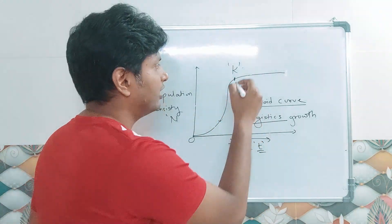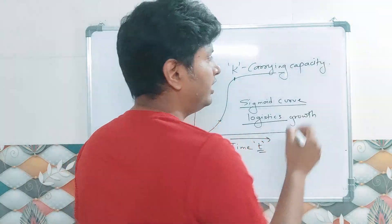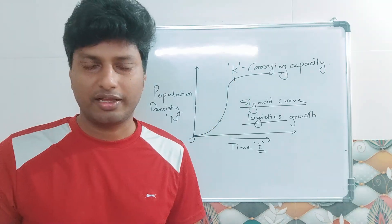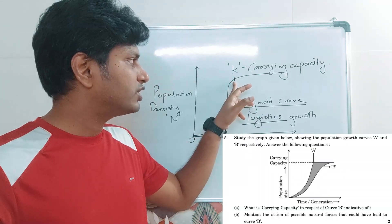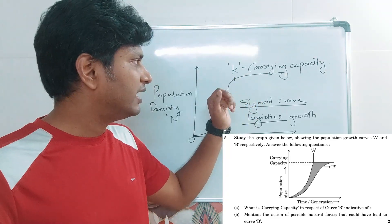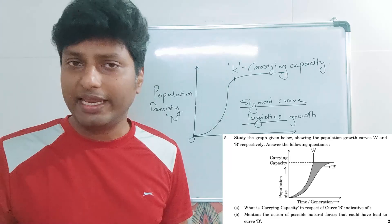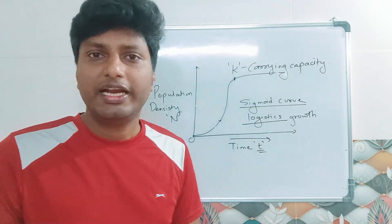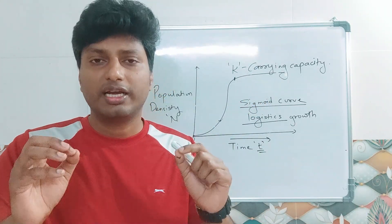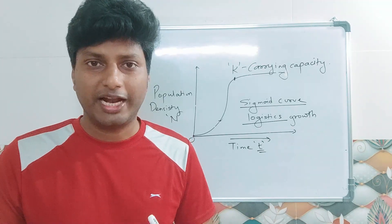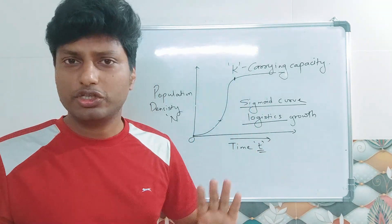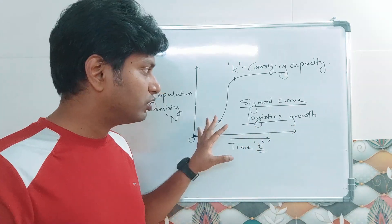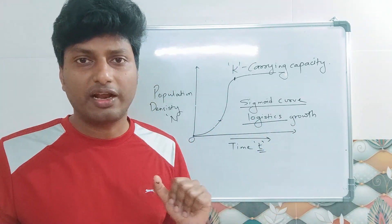The point at which the population stops growing is called the carrying capacity, denoted by the letter K. Carrying capacity is defined as nature's limited capacity to support the growth of a population. Such a graph is called a logistic graph, also referred to as a realistic graph.